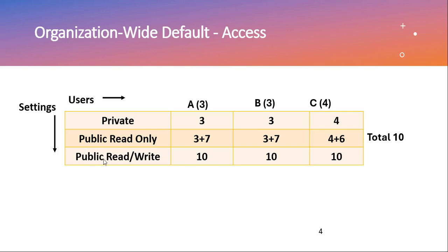Using a chart, we will see the access levels of OWD — private, public read-only, and public read-write. We have three users A, B, and C, each owning a number of records in object XYZ. If the OWD of that object is private, then user A can see only records owned by himself, user B can see only records owned by himself, and similarly user C.